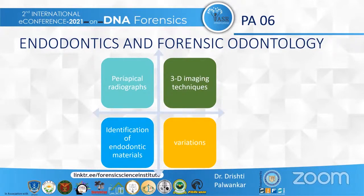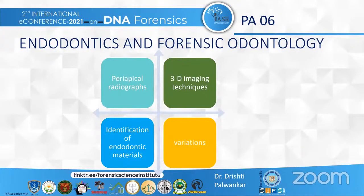Identification of endodontic materials is of utmost importance because various materials have different melting points. In cases where a person is burned or charred, these materials play an important role. For example, ceramic used for crowns has a melting temperature exceeding 1500 degrees Fahrenheit. So if a person is incinerated, we can determine whether the person had a crown and from where they may have received that treatment, and then correlate records with the help of an endodontist.